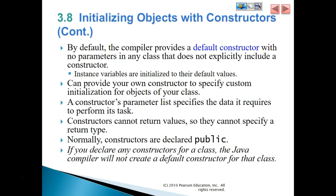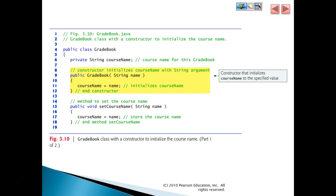You can provide your own constructor to specify custom initialization for objects of your class. A constructor's parameter list specifies the data it requires to perform its tasks. Constructors cannot return values, so they cannot specify a return type. Normally, constructors are declared public. If you declare any constructor for a class, the Java compiler will not create a default constructor for the class. Here we have a constructor that initializes course name to a specific value.